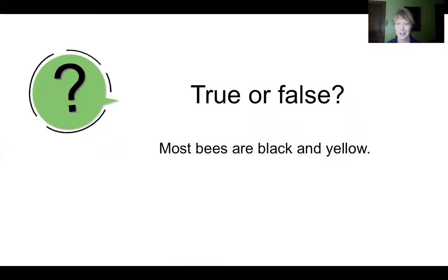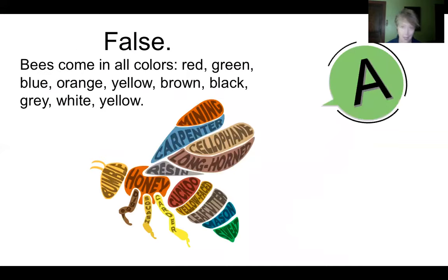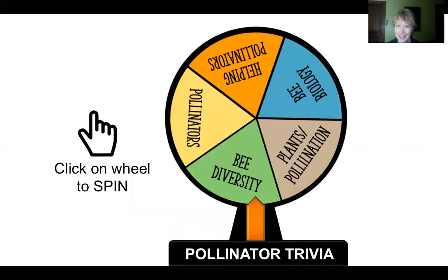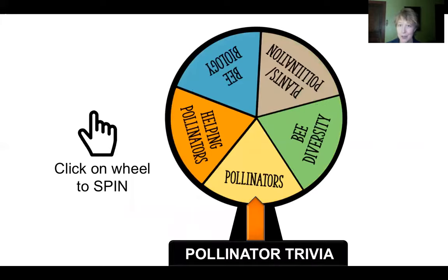The next slide has a true or false question: 'Most bees are black and yellow.' Clicking through will bring you to the answer and a little bit more information about the answer. Proceeding from there, you'll go to the next slide where you can click through to the next category and the next question.